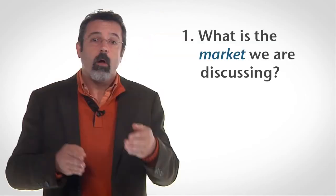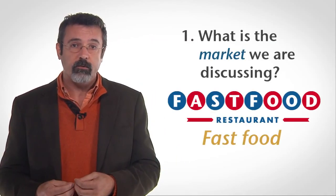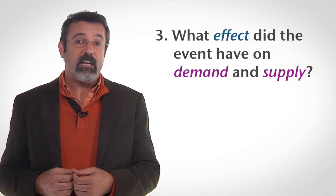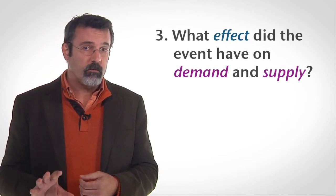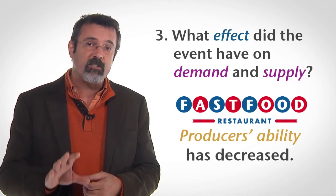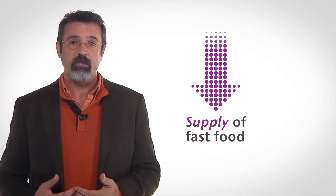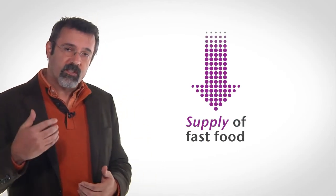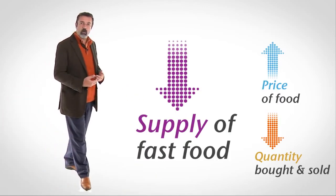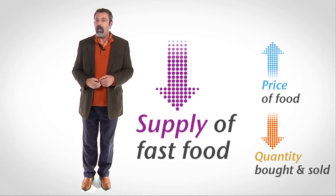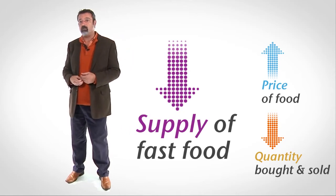Begin with the market for fast food. What happens when the minimum wage increases? We're talking about the market for fast food. The event is an increase in the minimum wage. Ignoring the price of fast food, producers' ability to offer fast food has decreased. The supply of fast food has decreased. When the supply of fast food decreases, we know that the price of fast food will rise and the quantity of fast food bought and sold will fall.